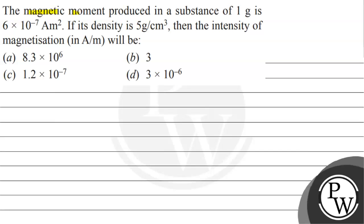Hello friends, let's see the question. The magnetic moment produced in a substance of 1 gram is 6 × 10⁻⁷ Am². If its density is 5 gram per meter cube,